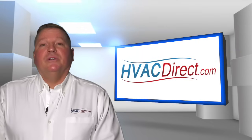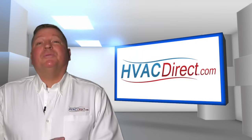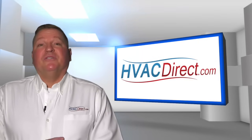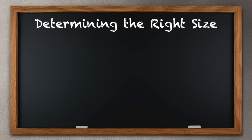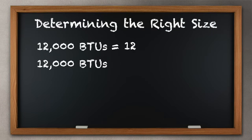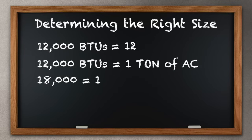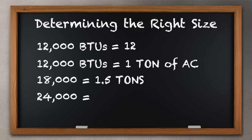When looking for a new AC unit, you will want to replace the old unit with a new unit that is the same size. The number to remember is 12,000 BTUs, or more simply 12. If 12,000 BTUs is equal to 1 ton of AC, then 18,000 is equal to 1.5 tons, and 24,000 is equal to 2 tons, and so on.